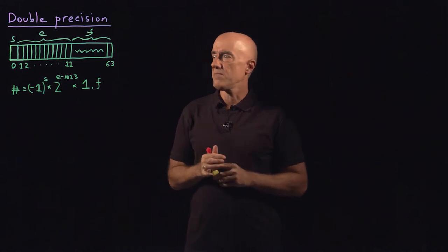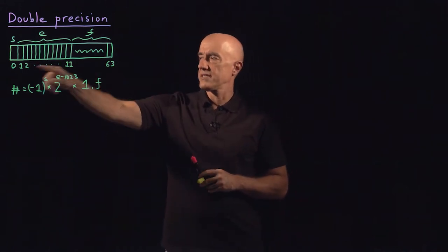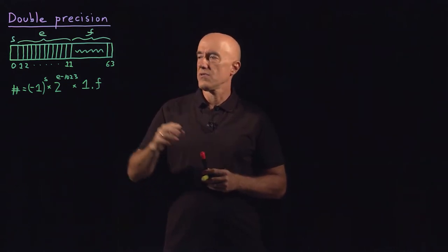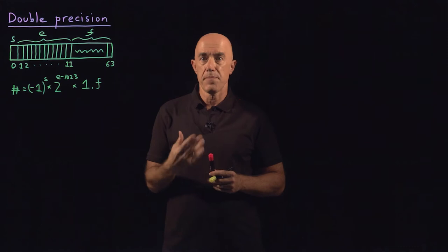The typical number that we will compute with in this course is called a double precision number. A double precision number uses 64 bits. Eight bits make a byte, so this corresponds to eight bytes.